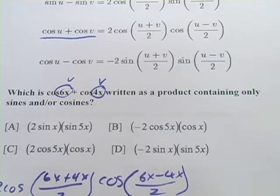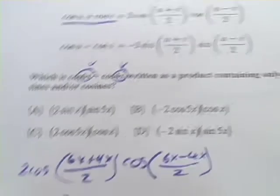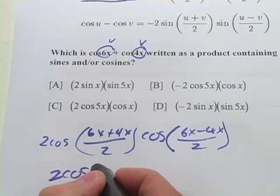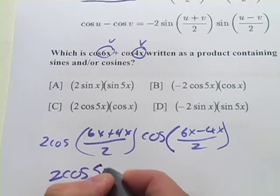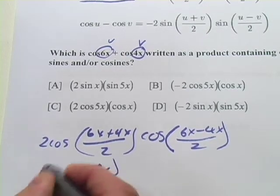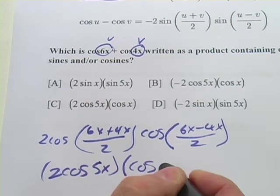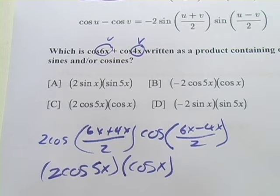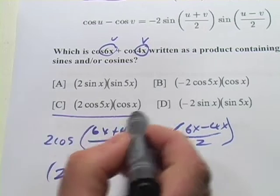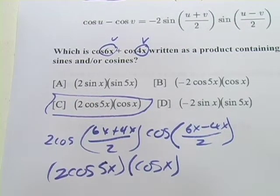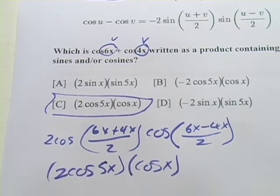Now when we simplify this a little bit, we've got 10x divided by 2, so that's 2 times the cosine of 5x times the cosine of 2x divided by 2, that would just be cosine of x. And what we get here is c. So not too hard, really just plugging in some values on that one.